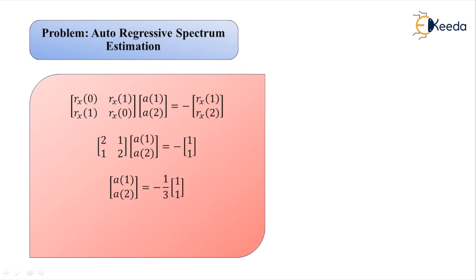The model error ε₂ (epsilon subscript 2, for p=2) is calculated as: ε₂ = rx(0) + a(1)·rx(1) + a(2)·rx(2). Substituting the values gives ε₂ = 4/3. With these values, the AR model can be expressed in the Fourier domain.